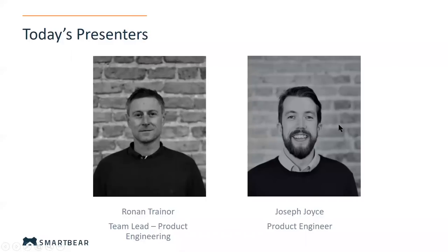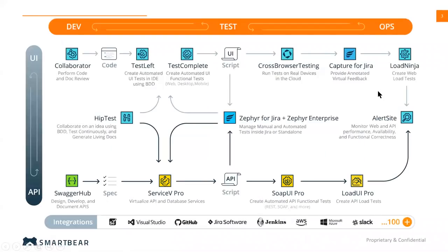So that's myself on the right, Joe Joyce, and my colleague Ronan on the left. As Ronan mentioned, we're a global organization with quite a footprint, so chances are you might have heard of or used one or two of our tools. SmartBear has tools that fit across various points of the software development life cycle, and tools that can fit in at every layer of testing from the UI down to the API and service layer. From the UI point of view, we're talking about tools like TestComplete.